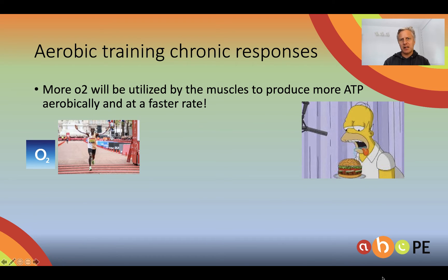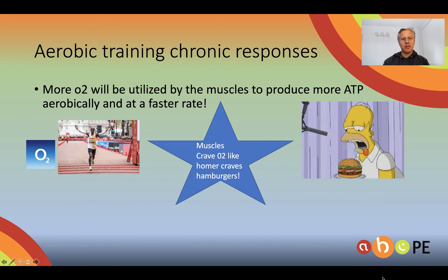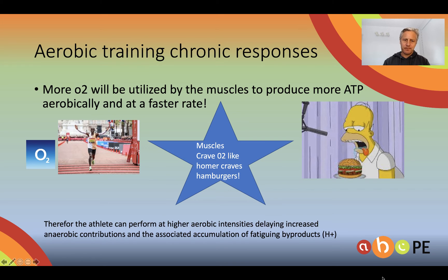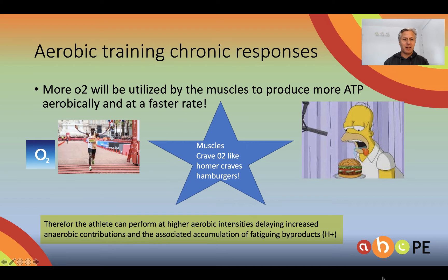Let's concentrate on the aerobic training chronic responses today. Essentially what we want to know is that most of these will end with more oxygen being utilised by the muscles. They need more oxygen to produce more ATP aerobically and to produce that ATP at a faster rate. As a result of getting more oxygen, the athlete can perform at higher aerobic intensities and delay the increased contributions of the anaerobic systems, thus the associated accumulation of metabolic byproducts won't occur.